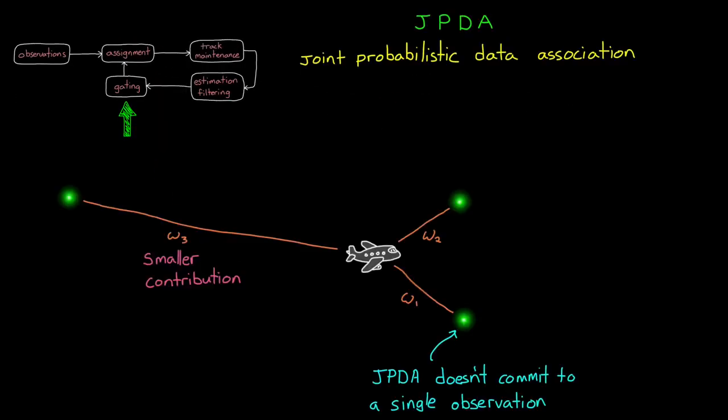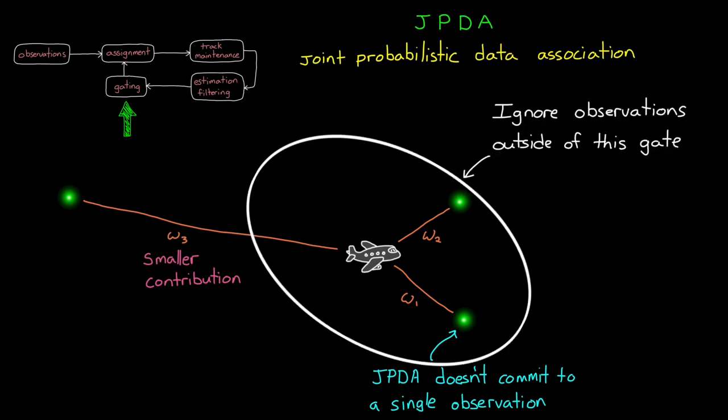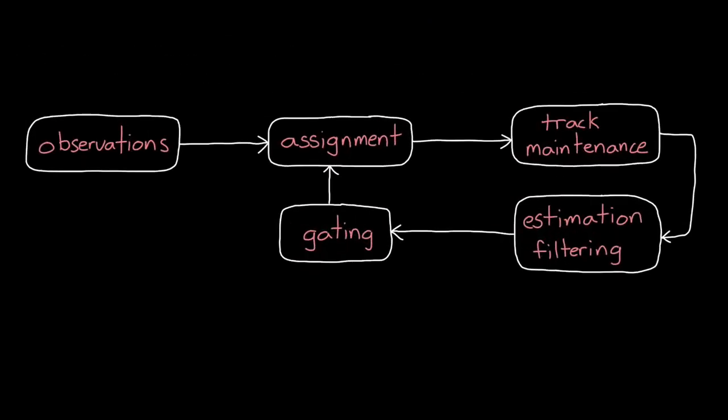For example, with JPDA, an observation that's really far away from the tracked object would statistically contribute very little to the overall solution. So why spin the computational resources to even calculate this minuscule amount? And this is especially true if you're tracking dozens or hundreds of objects. This could be extremely wasteful. But by ignoring observations outside of a specific region, outside of this gate, we can speed up the assignment process.